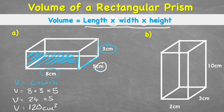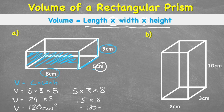Because volume uses only multiplication and multiplication is commutative, our answer is always 120 centimeters cubed regardless of order. Let's prove it: five times three times eight — five times three is 15, times eight equals 120. Same answer.